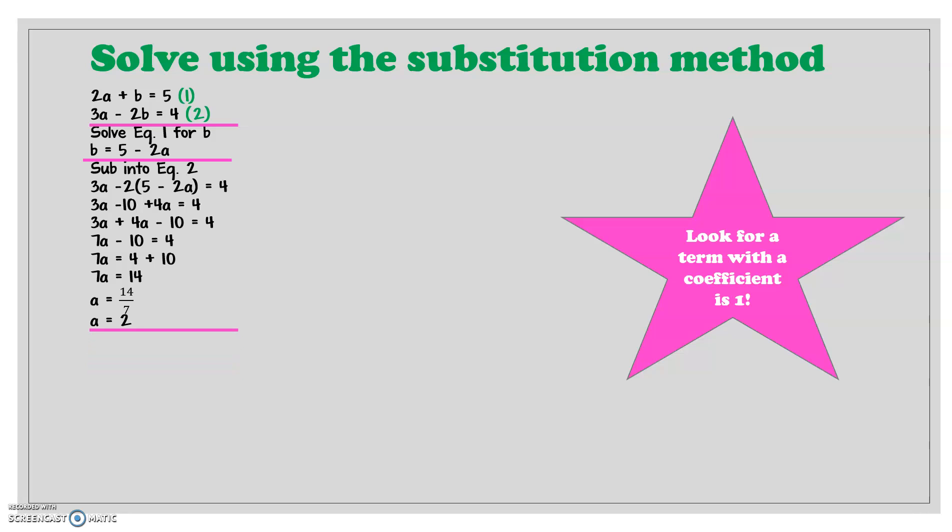Alright, now I know what a is. I want to substitute a equals 2 back into equation 1. So 2a plus b equals 5. 2 times 2 plus b equals 5. 4 plus b equals 5. So b is equal to 5 minus 4. b is just equal to 1.